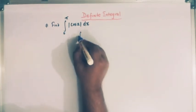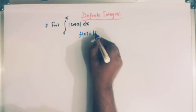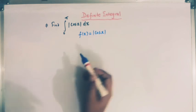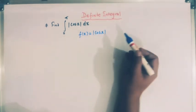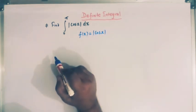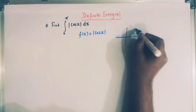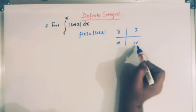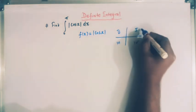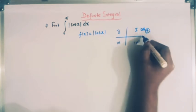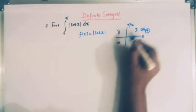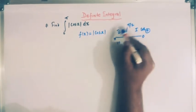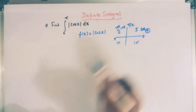Suppose mod of cos x is denoted by the function f of x. Now, we know that the cosine function is positive in the first quadrant and negative in the second quadrant. Here we have the quadrants: first, second, third, and fourth. So in the first quadrant, cosine is positive — that is from 0 to pi by 2 — and from pi by 2 to pi, the cosine function is negative.